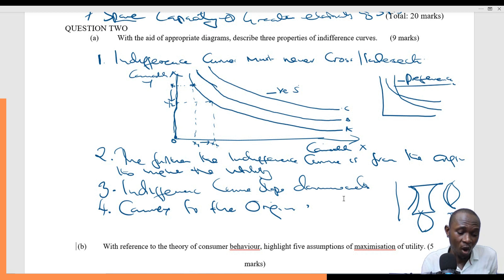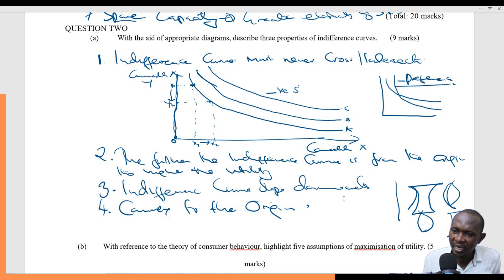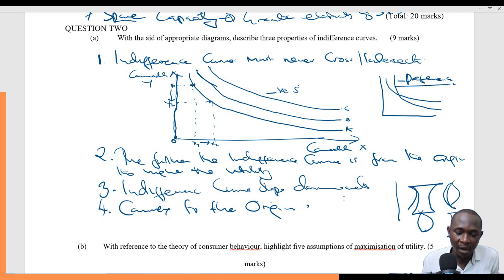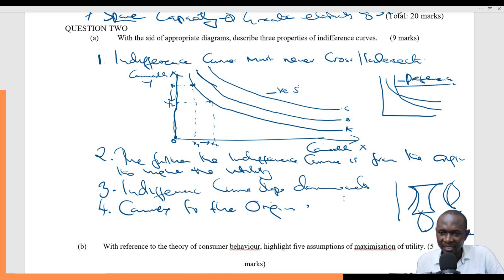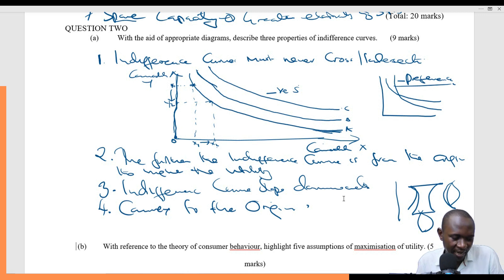There is also a reason why indifference curves are convex to the origin. These curves assume a convex shape, and generally the curves slope downwards. They get flatter as you move down the curve to the right.